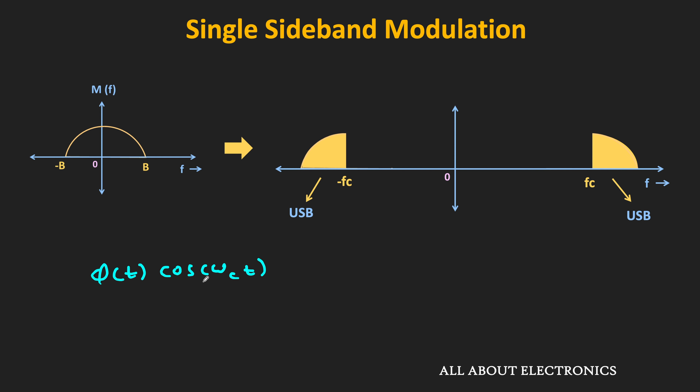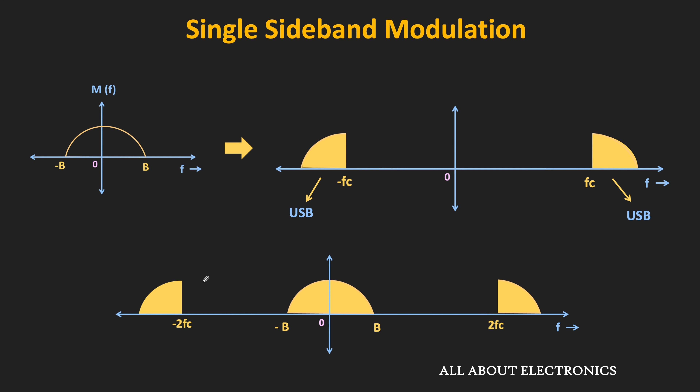On the positive side, the spectrum will shift to 2fc and 0. Similarly, on the negative side, it will shift to −2fc and 0. So using a low-pass filter, it is possible to recover the message signal.